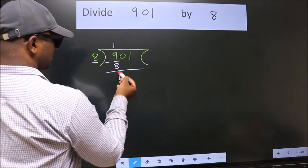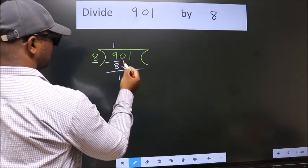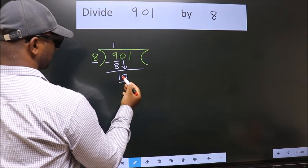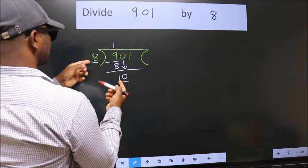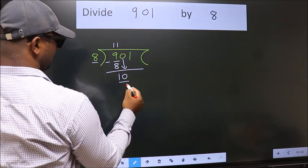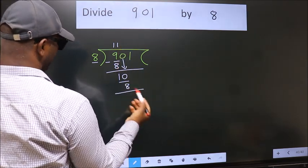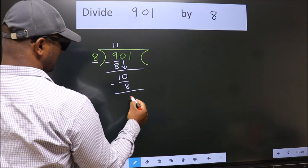After this, bring down the next number. So 0 down, making 10. A number close to 10 in the 8 times table is 8. 8 once is 8. Now we subtract. We get 2.